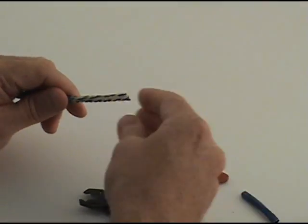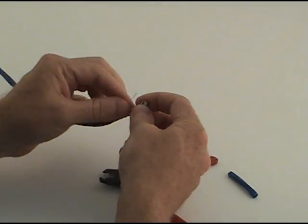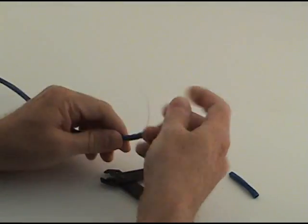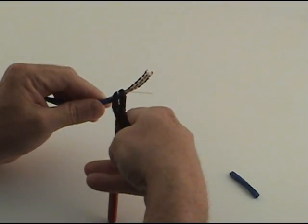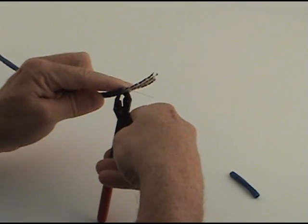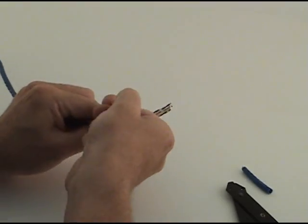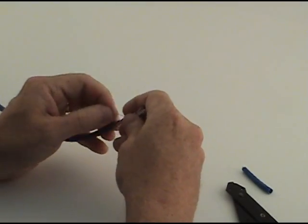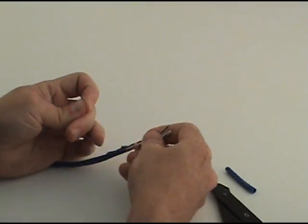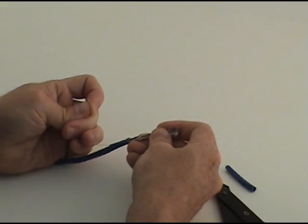This is the outer jacket. In here you notice you have a little string. You want to pull back on that. Sometimes you have to start it in thick jackets. People use different cutters. You can actually use scissors, but you see how that is ripping the outer jacket.